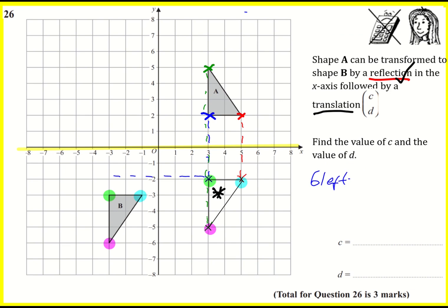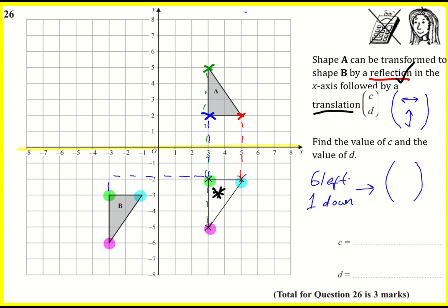And how many down? One down. Now we need to put this into a column vector. In a column vector, the number on top indicates whether you're moving left or right, and the bottom one indicates whether you're moving up or down. If you're moving to the right or up, it's a positive value.